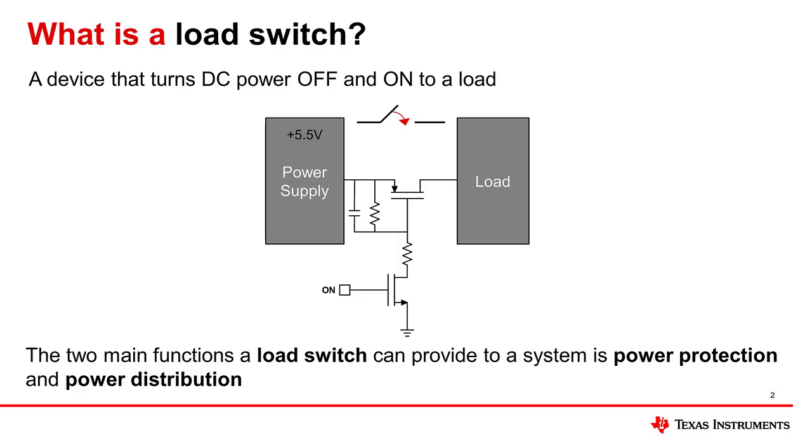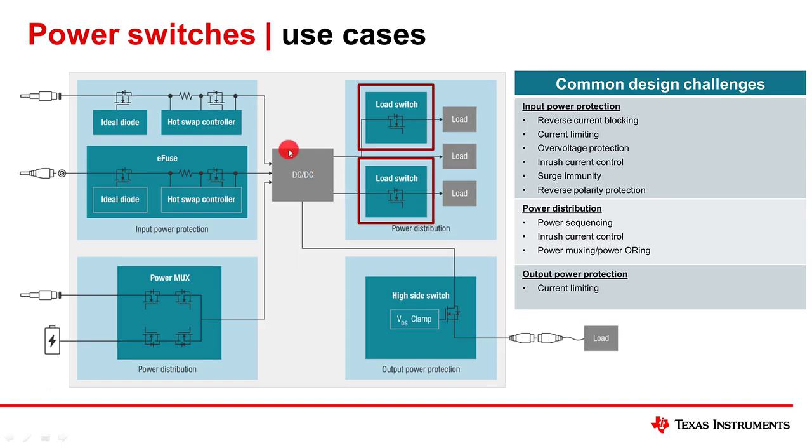A load switch is a device that enables and disables DC power rails to a load and offers different power protection features to fit your system needs. They're typically placed after your DC to DC converter and on the same board as the load.